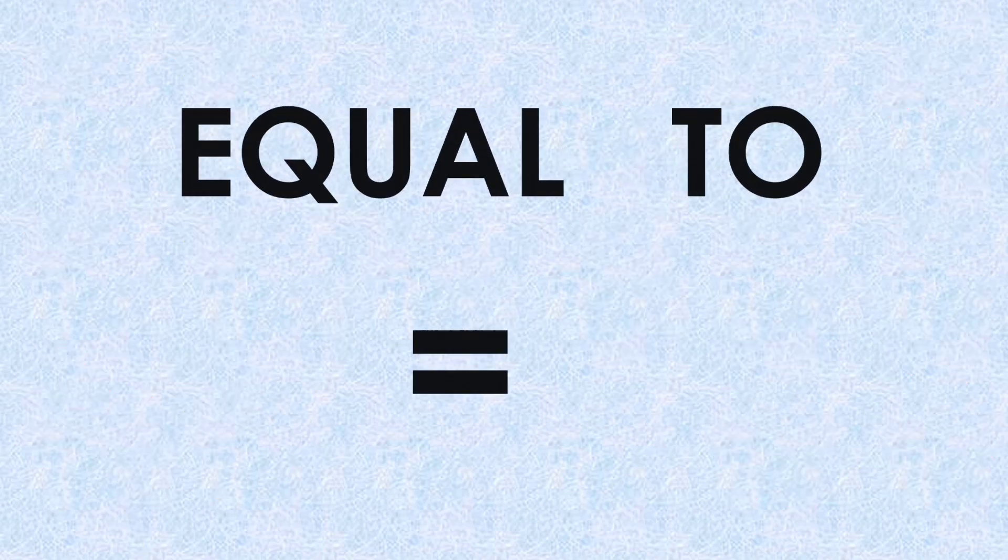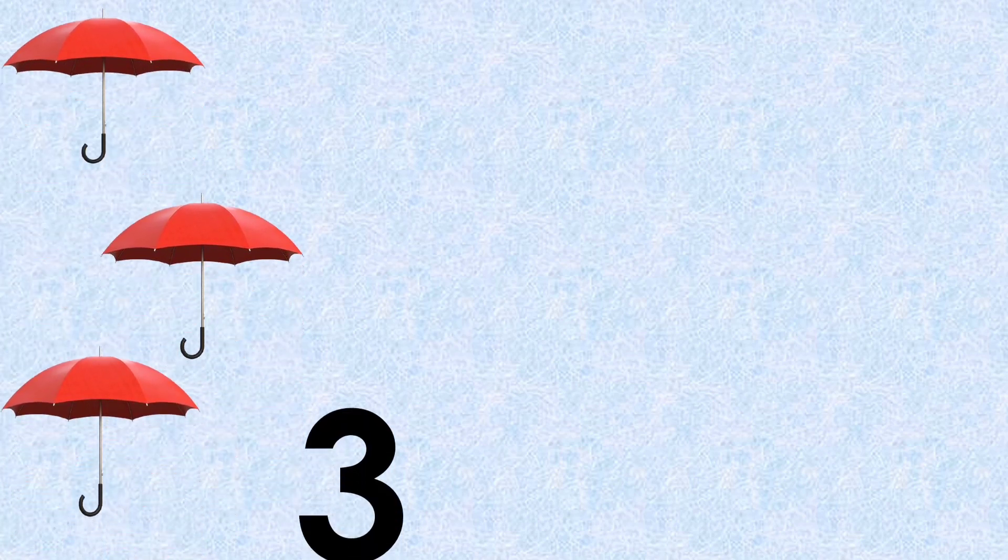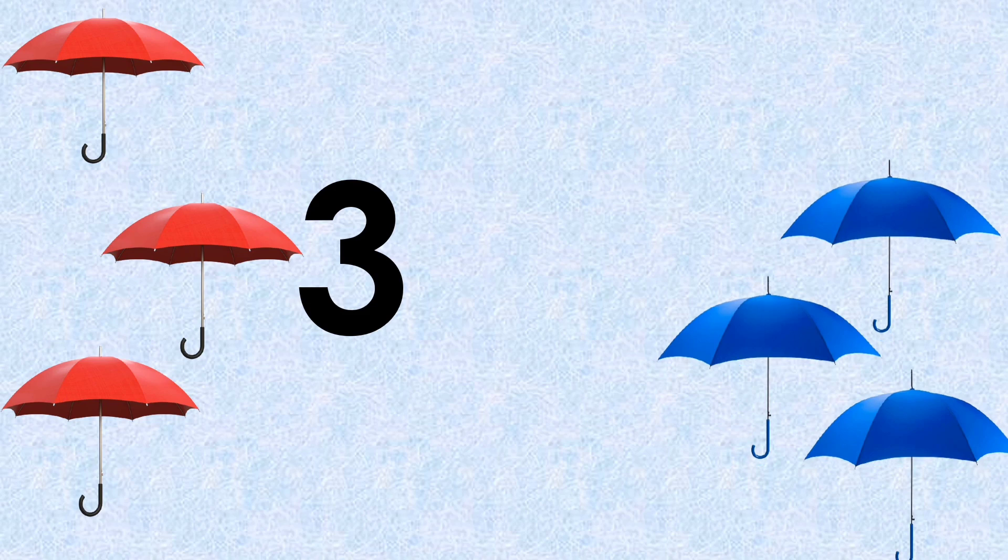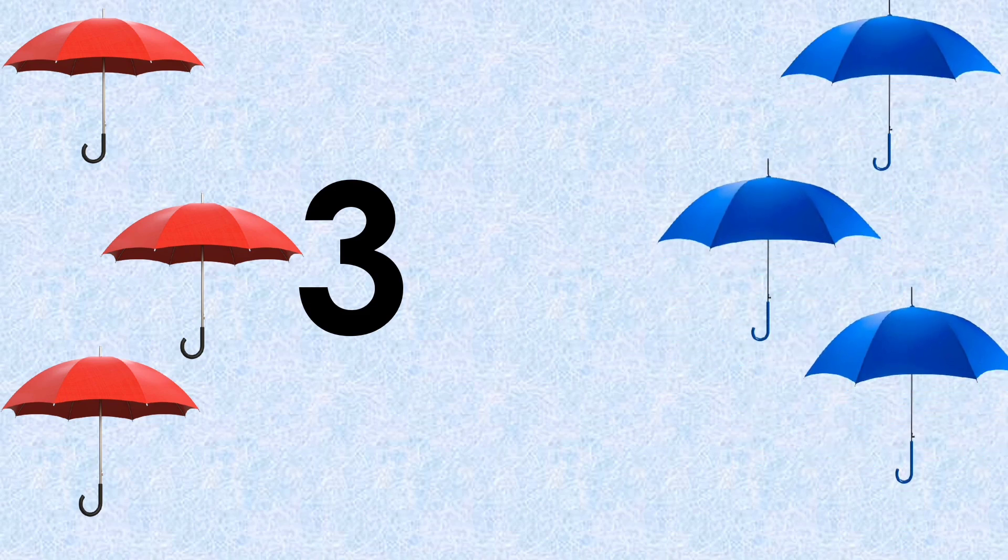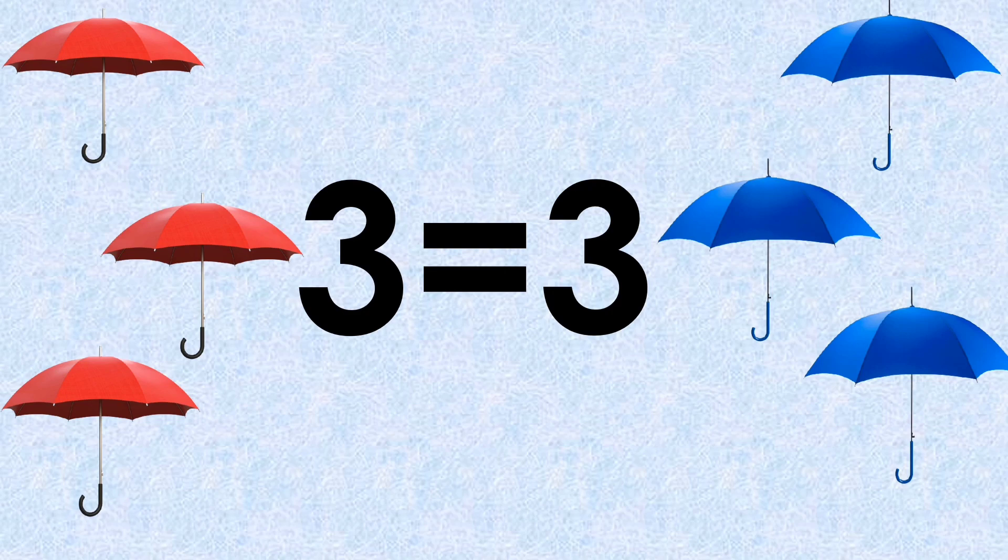Okay, now we will learn equal to. It's very simple to understand. Number of red umbrellas on one side: three. Number of blue umbrellas on the other side: also three. So on both sides, the number of umbrellas are equal. So here we will put the equal sign. Equal sign means two slipping lines.